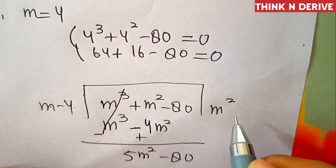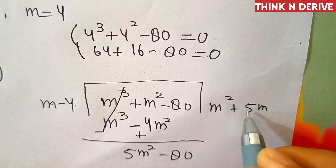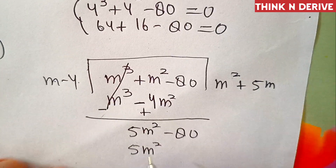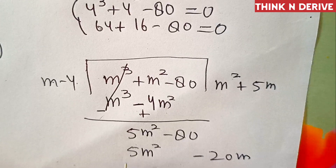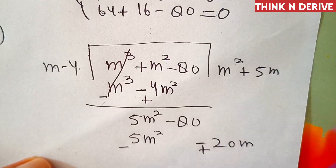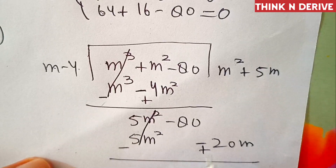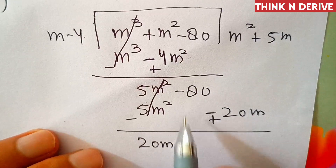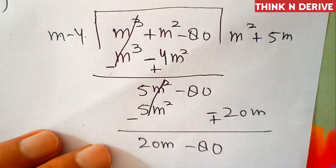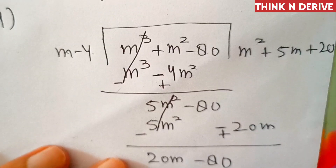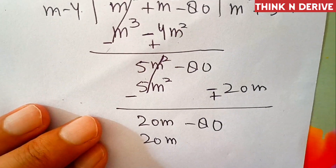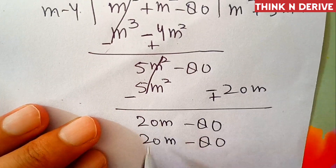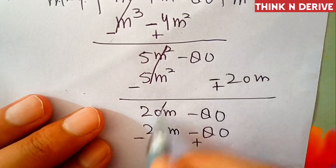We multiply by 5m: m into 5m is 5m square, and 4 into 5m is 20m. Subtracting, those cancel out, leaving 20m minus 80. We multiply by 20: m into 20 is 20m, and 4 into 20 is 80. Subtracting, here remains 0.